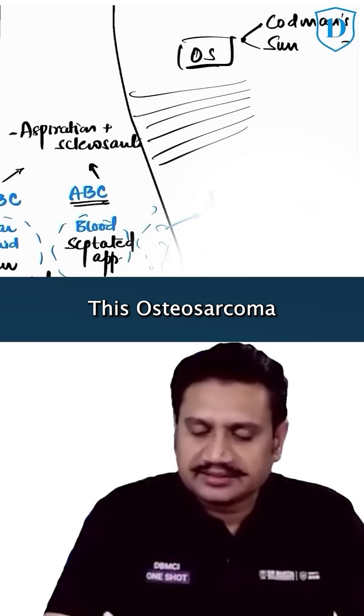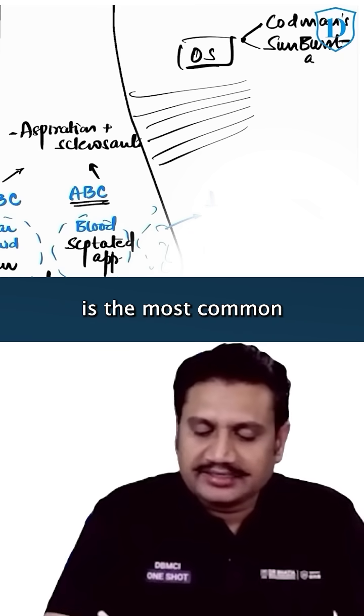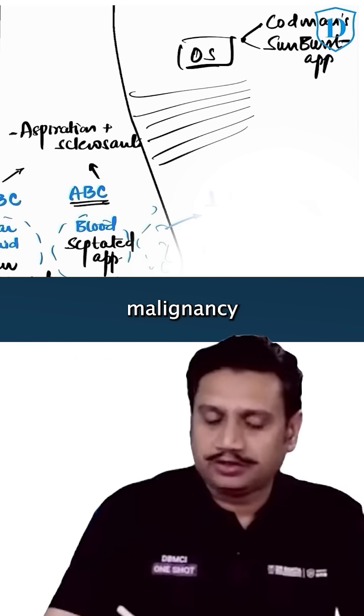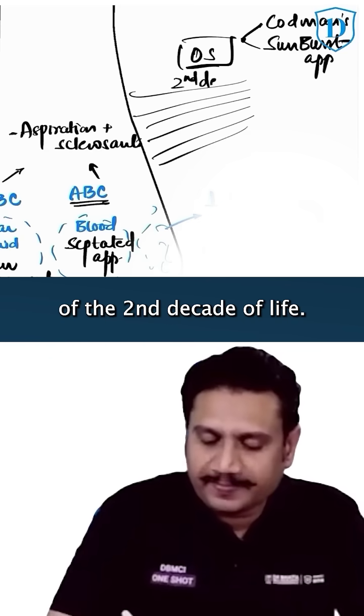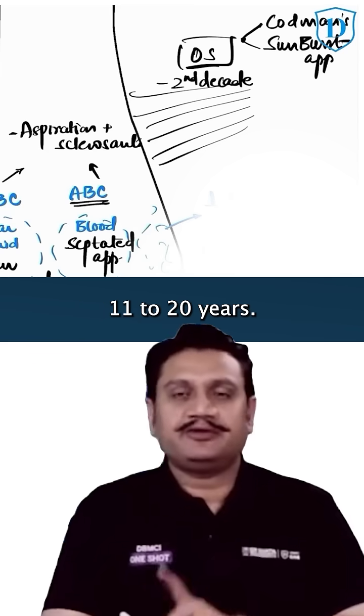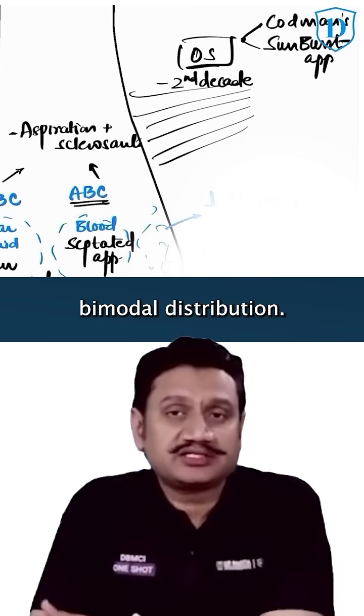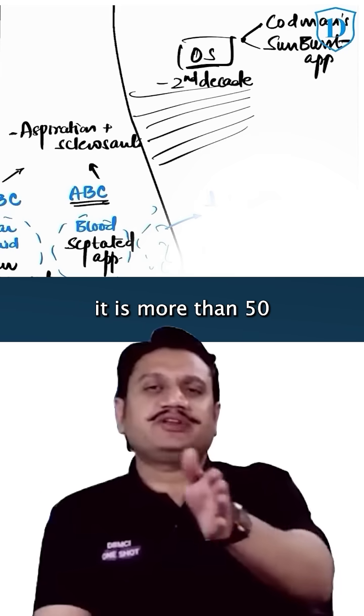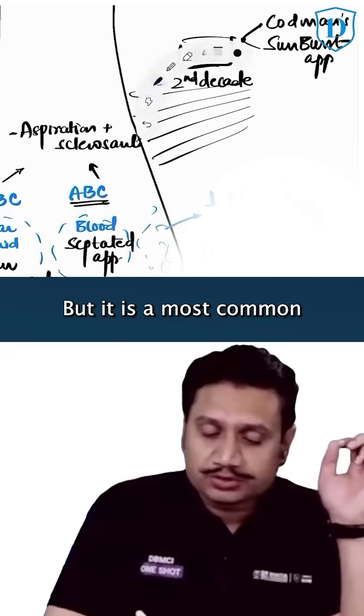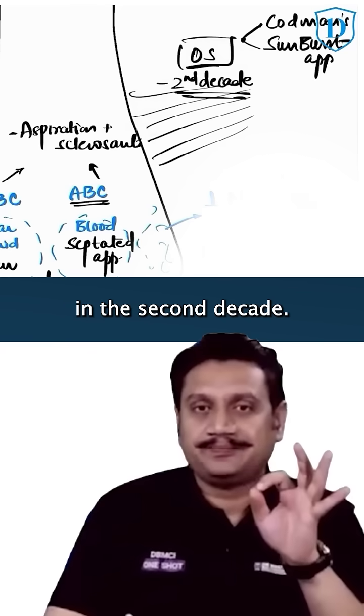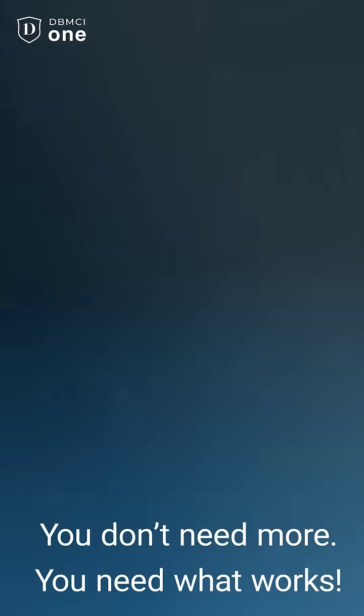Remember, this osteosarcoma is the most common malignancy of the second decade of life, the pediatric population 11 to 20 years. It has got a bimodal distribution. In adults, it is more than 50, 60, or 70, but it is the most common bony malignancy in the second decade. These are all metaphyseal ones.